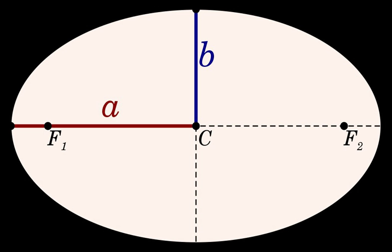The length of the semi-major axis of an ellipse is related to the semi-minor axis's length b through the eccentricity e and the semi-latus rectum, as follows: b equals a√(1 − e²), and l equals a(1 − e²), with a·l equals b².